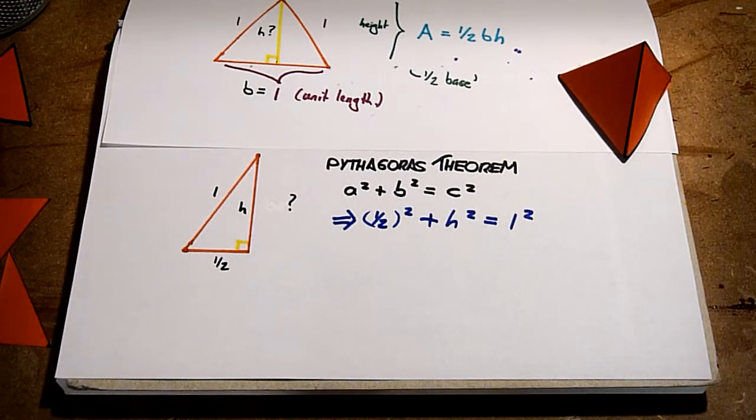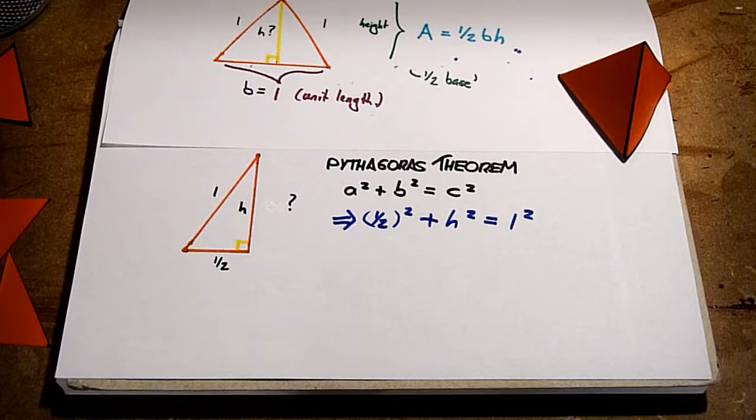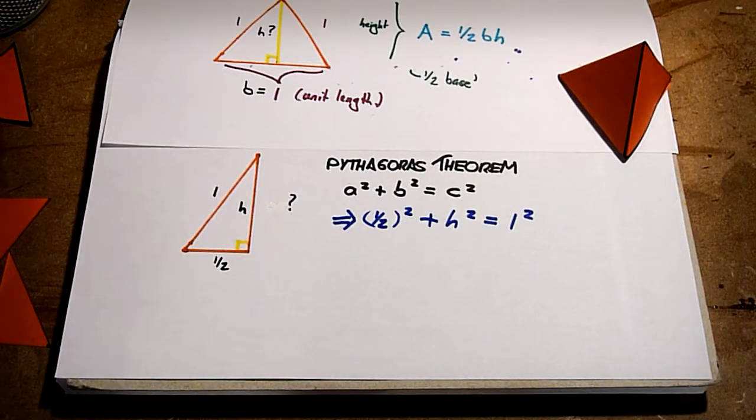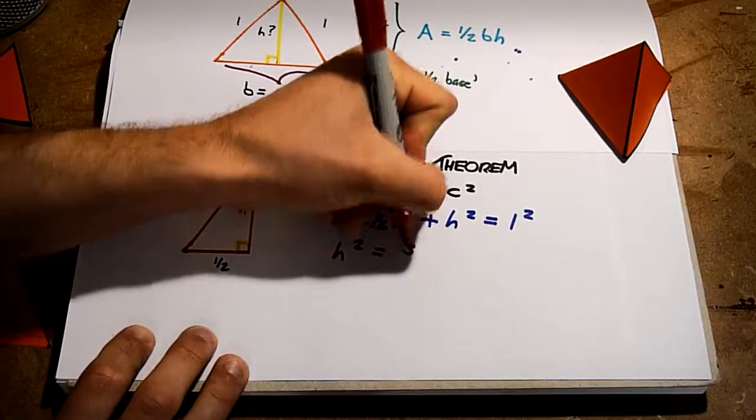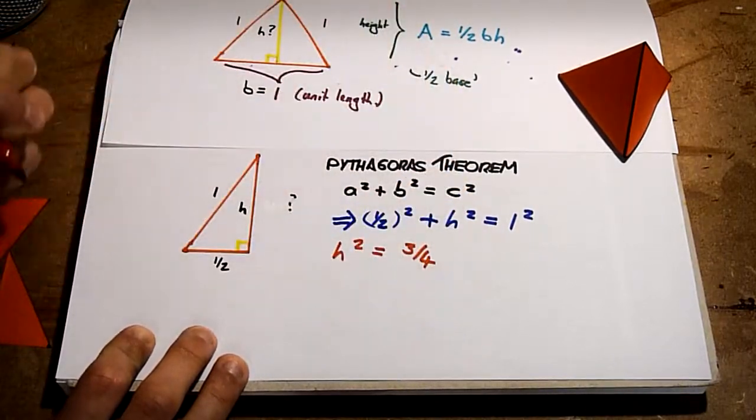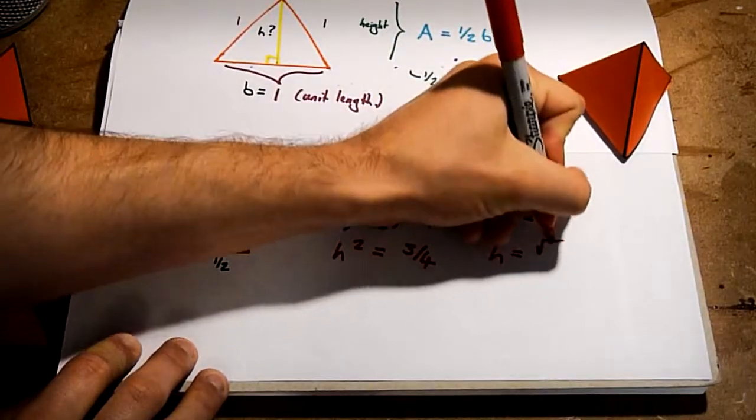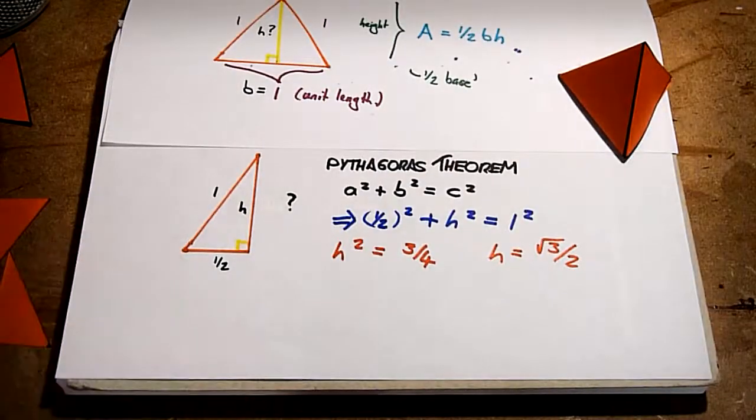And so we have a half squared plus h squared equals 1 squared. Rearranging we get h squared equals 1 minus a quarter, 3 quarters. Then taking the positive square root, h equals root 3 over 2.